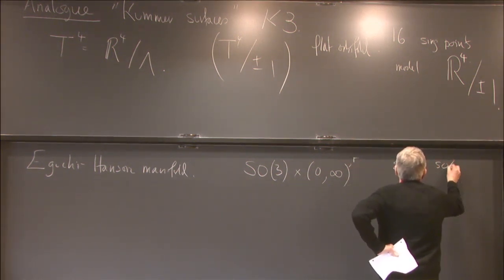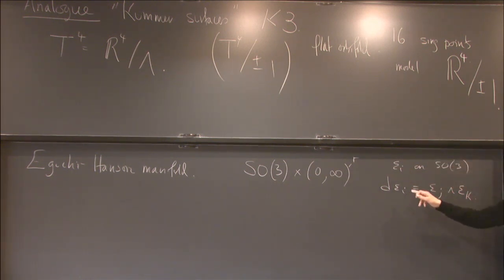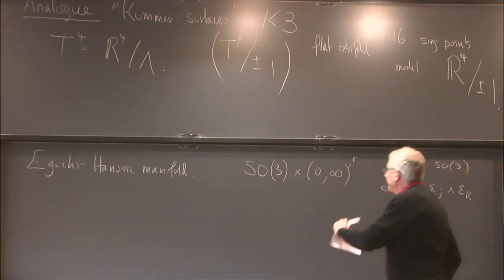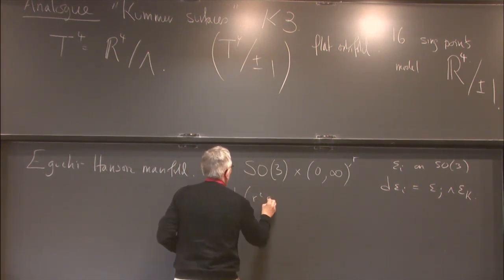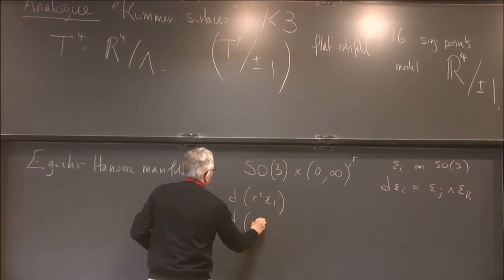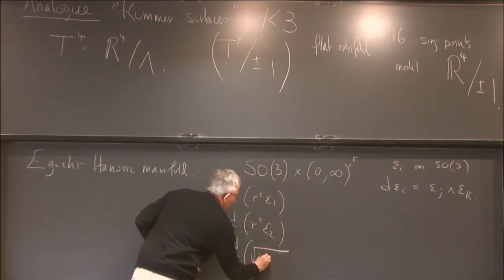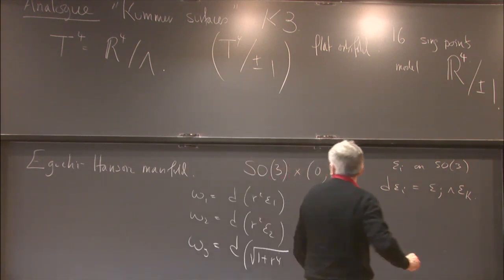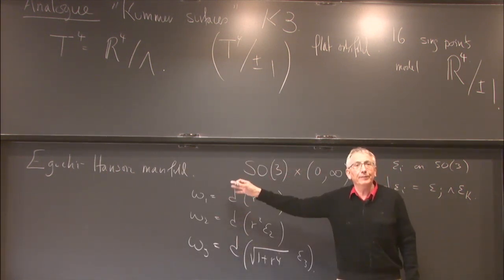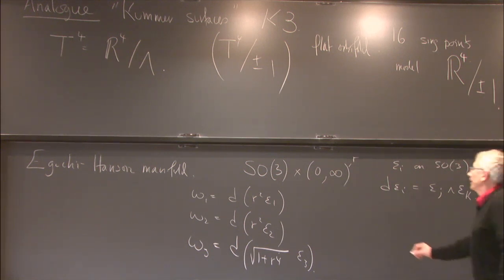On SO(3) we have a standard triple of left-invariant one-forms ε_i satisfying dε_i = ε_j ∧ ε_k for cyclic permutations of 1,2,3. On this four-dimensional manifold we write: ω_1 = d(r²)ε_1, ω_2 = d(r²)ε_2, and ω_3 = d(√(1+r⁴))ε_3. One can check these three forms satisfy the identities required: they're closed (being d of one-forms) and satisfy the orthogonality condition, defining a hyperkähler structure.